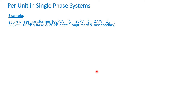Now let's do a quick example. Assume we have a single-phase transformer rated 100 KVA. The primary voltage is 20 kV, the secondary voltage is 277 volts, and the transformer impedance is 5% or 0.05 per unit on a 100 KVA base and a 20 kV base — where P is primary and S is secondary.